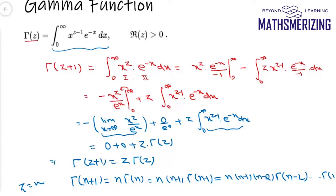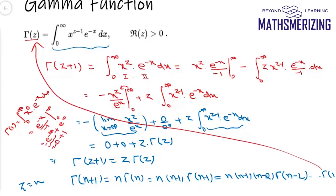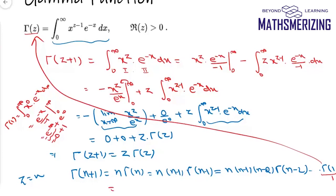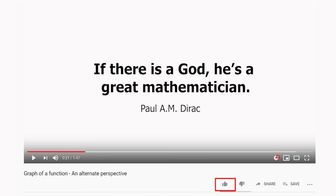To find gamma(1), I put z equals 1 into the definition: gamma(1) equals the integral from 0 to infinity of x to the power 0 times e to the power minus x dx, which gives e to the power minus x over minus 1 from 0 to infinity. Substituting the limits, e to the power minus infinity is 0 and e to the power 0 is 1, so gamma(1) equals 1. Therefore gamma(n+1) equals n times (n minus 1) times (n minus 2) all the way down to 1, which is simply n factorial. This is how the gamma function is related to the factorial function.